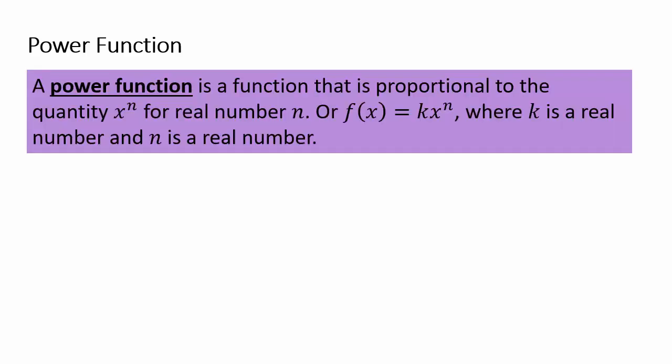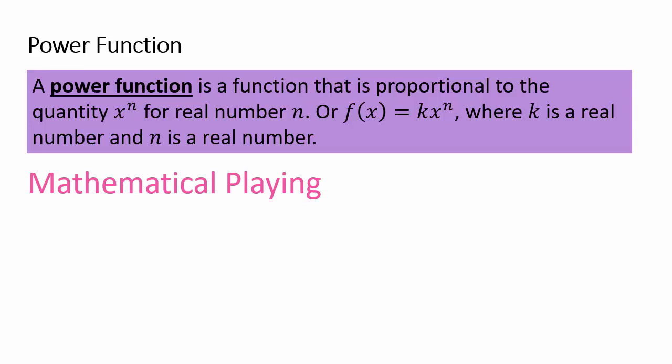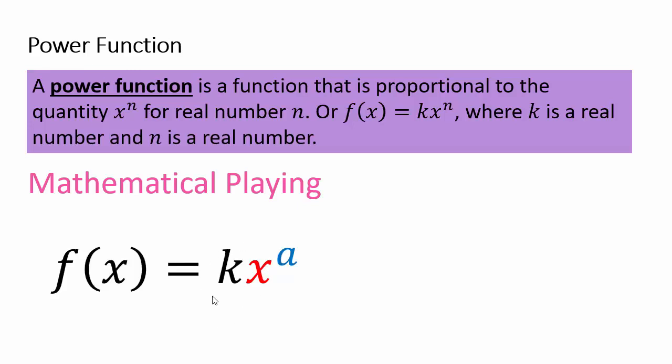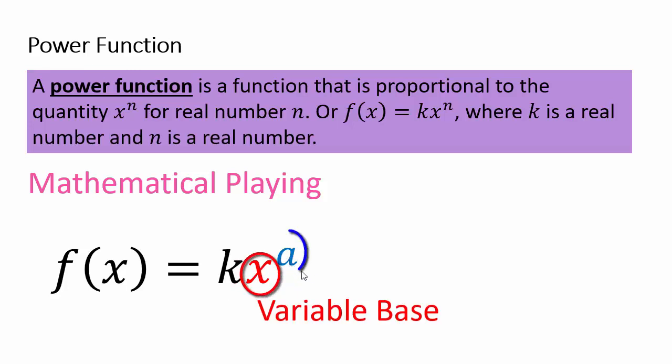Do you recall last section we studied power functions? Those were functions of the type f equals some constant times the input to a fixed power n. We studied for different values of real numbers what those functions look like. A power function has a constant times a variable base to a fixed power — the variable base was our input and the fixed power determined which kind of power function we were studying.